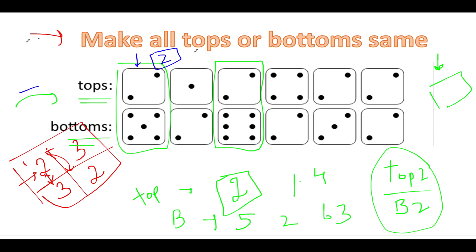Moving ahead, we have 1 at the top and 2 at the bottom. Since the top is not equal to the target, we check the bottom — it equals 2, so we swap, contributing 1 rotation. Next we see 2 — target achieved. Next we see 4; the bottom is 2, so we swap and the conversion count becomes 2. The remaining values are all 2, so we have successfully made all tops point to 2 with a total of 2 rotations.